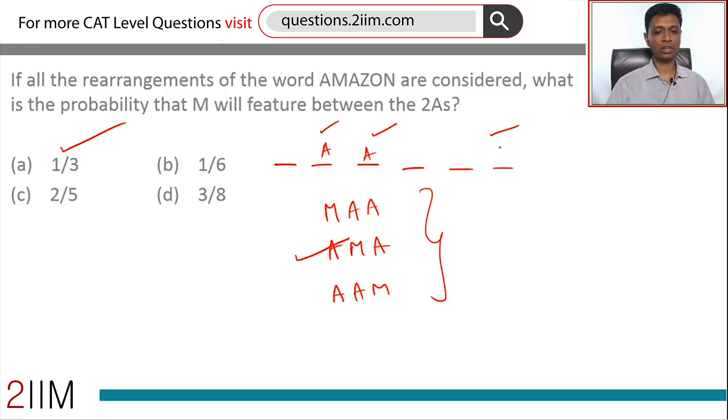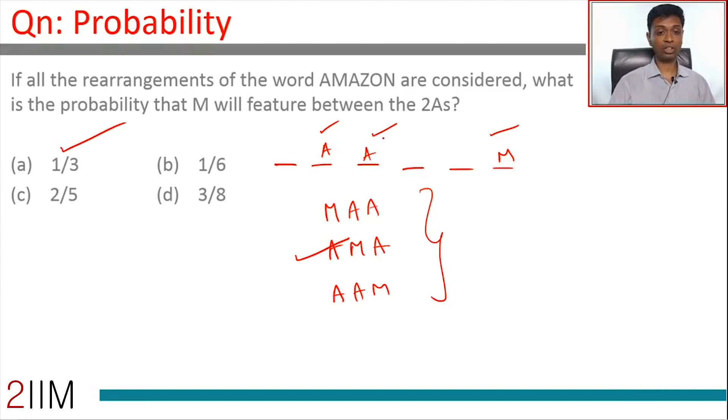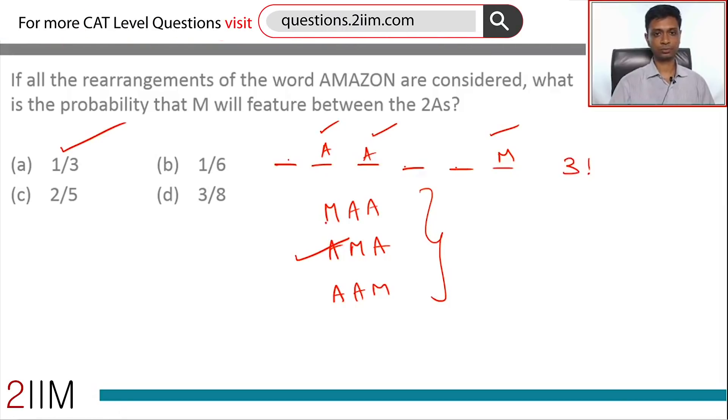Further, let's say A is here, A is here, and M is here. Think about how many words are there with A, A, and M in these three slots. That means Z, O, and N are in the remaining three slots. There are three factorial words possible with A, A, and M in the second, third, and sixth slot respectively.